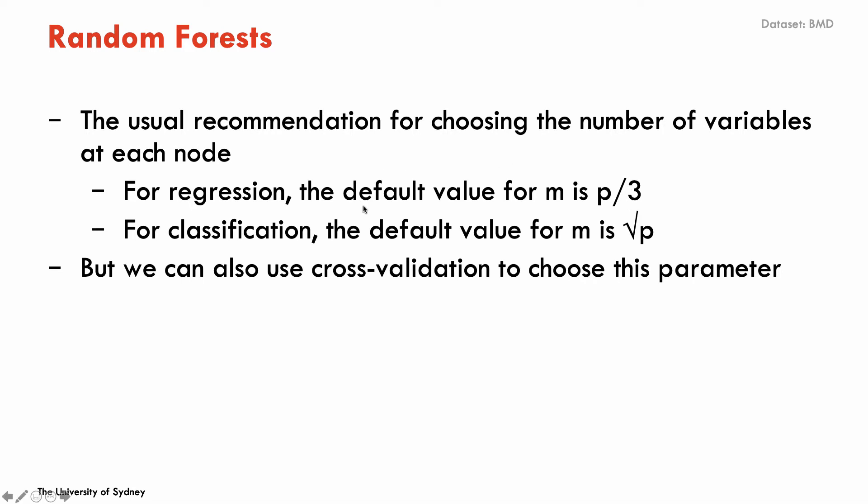And for classification problems, it's the square root of P. So we can either set these values or we can actually run cross-validation to choose the number of predictors that we evaluate at each split and see which one minimizes the mean squared error or maximizes the ROC curve.